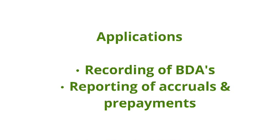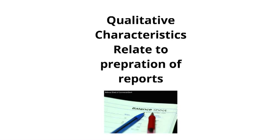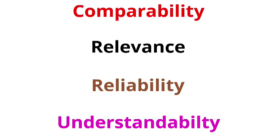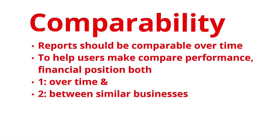The reporting period principle requires BDAs — accrued expenses, prepaid expenses, and depreciation in Unit 3, and accrued and prepaid revenue in Unit 4. Now, while principles relate to the way we record information, QCs relate to the way we report it. There's some overlap — for example, comparability has massive overlap with consistency.